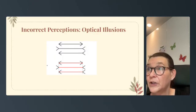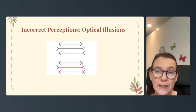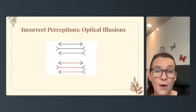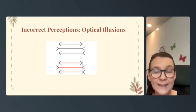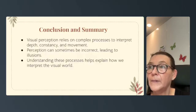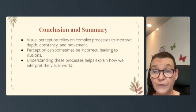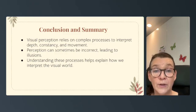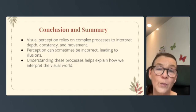The last topic is incorrect perceptions, or optical illusions — how visual cues can lead to incorrect interpretations. Two examples are the Müller-Lyer illusion, which is the line with the arrows, and the Ponzo illusion, which involves lines converging into the distance. Your eyes can fool you when looking at these, creating the optical illusion. To summarize the second CED question: visual perception relies on complex processing to interpret depth, constancy, and movement; perceptions can sometimes be incorrect, leading to illusions; and we must understand how these processes help explain how we interpret the visual world.